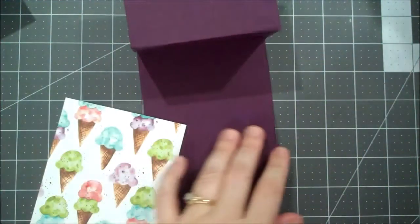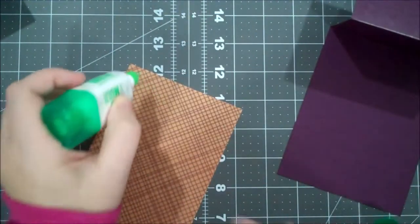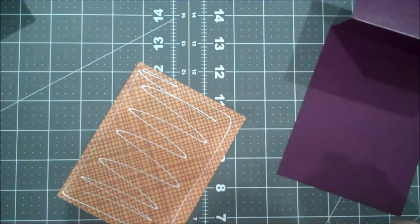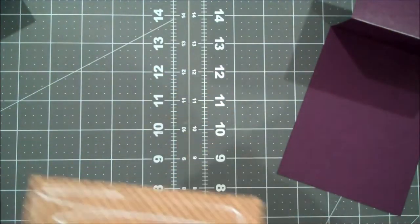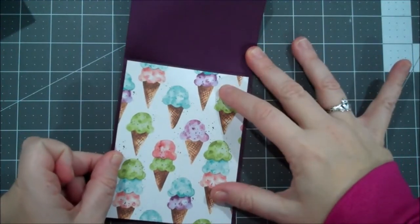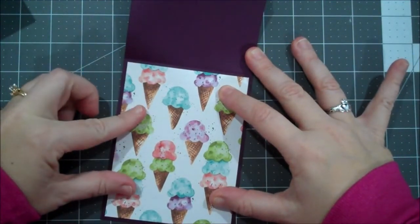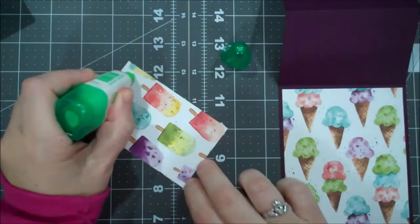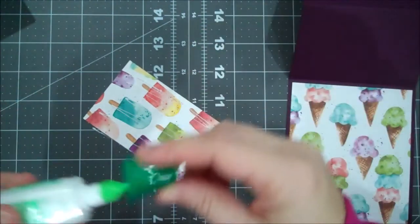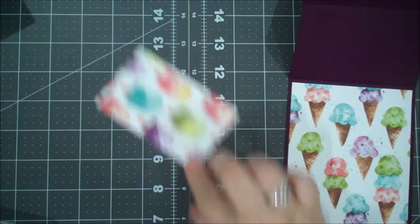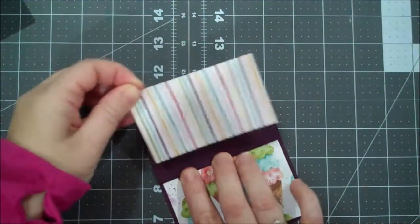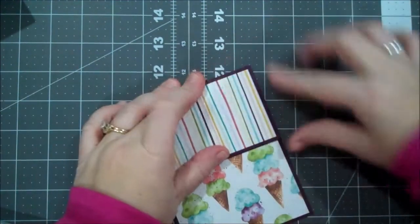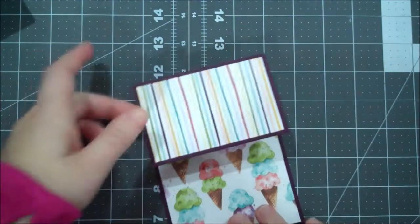Let's get some of our liquid glue. I like using the liquid glue because it gives you some time to move your designer series paper to get it nice and lined up. And we want our ice cream cones going the correct direction. That looks good. We're going to take our other piece of designer series paper.